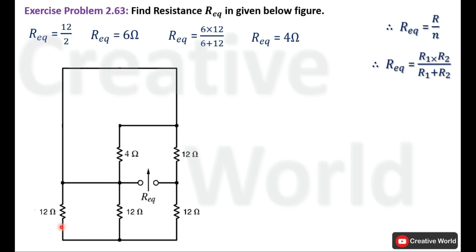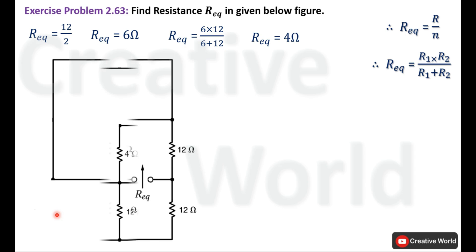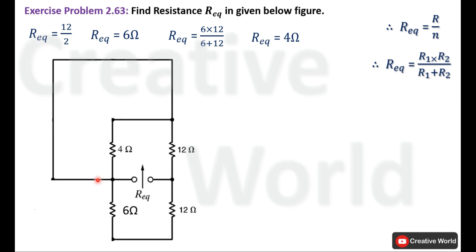We replace those two resistances with a single 6 Ohm resistance. Now we observe that the 4 Ohm resistance is being short-circuited through this loop. It will not contribute to the total resistance of the network, so we replace this 4 Ohm resistance with a simple wire.